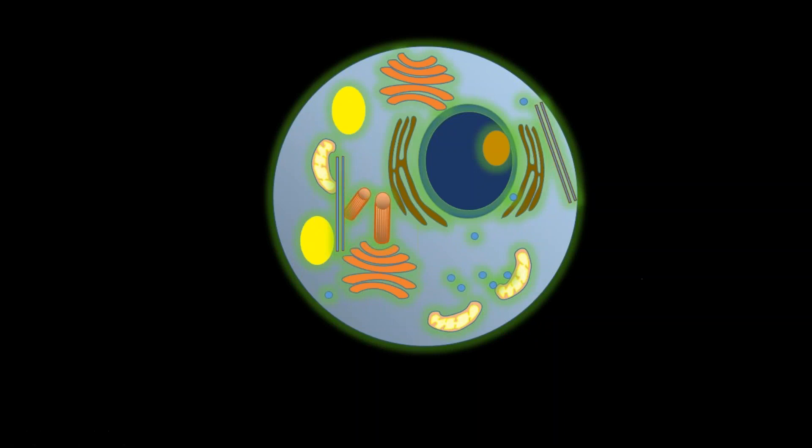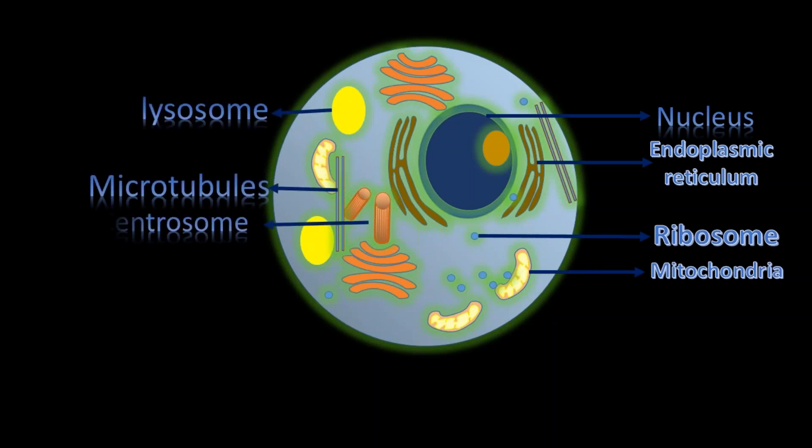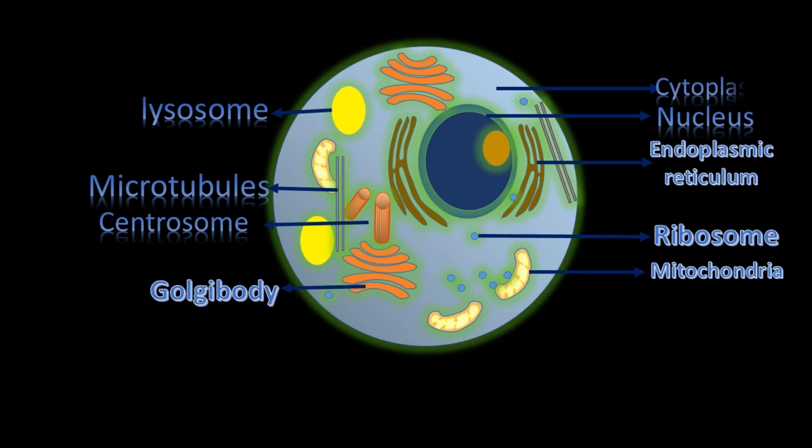Let us see the cell and its organelles. The cell contains nucleus, endoplasmic reticulum, ribosome, mitochondria, lysosome, microtubules, centrosome, Golgi body, cytoplasm, and cell membrane.